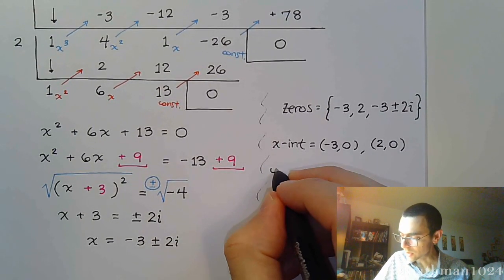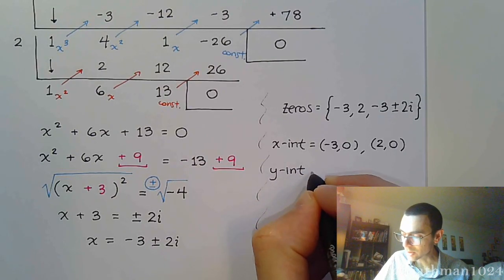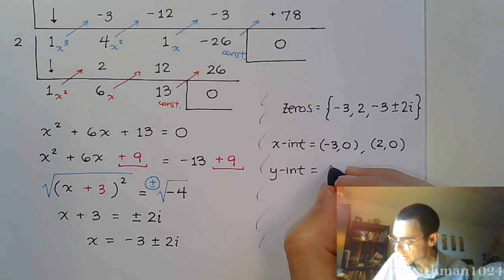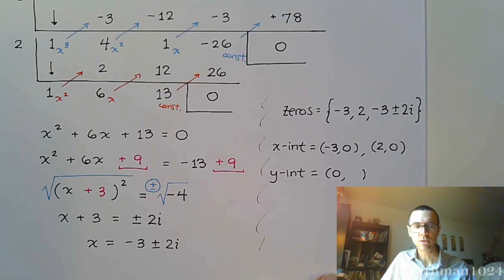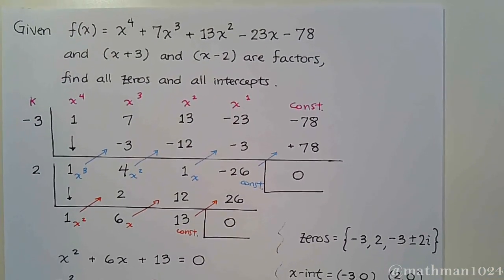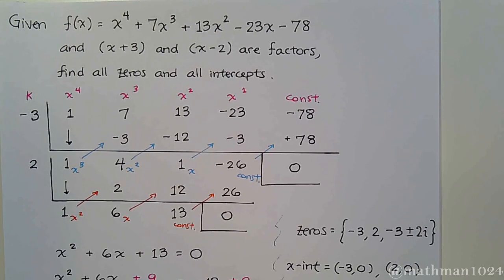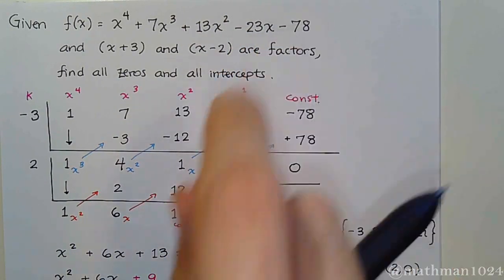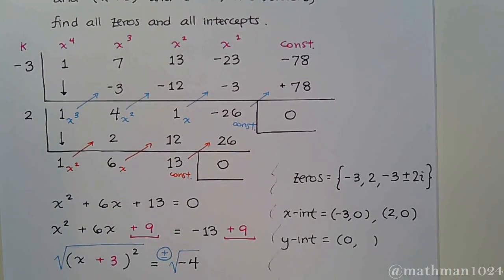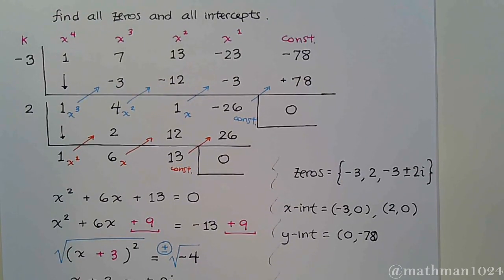Now, what a lot of students forget about is that when I say find all intercepts, I also mean find the y-intercept. The y-intercept is going to be 0, comma, something. And let's scan back up to the top of the page and we see what happens when I plug in zero to everything. When I plug in zero to all these x's, the only thing that's going to be left is my constant. So for my y-intercept, it's going to be 0, comma, negative 78. So we found all the zeros and all the intercepts. So let's stop this one and let's do a brand new problem here on the next video.